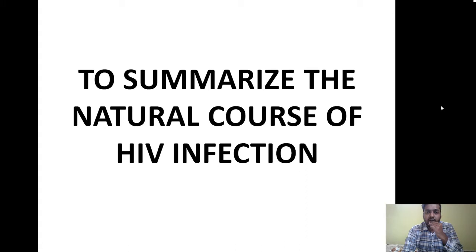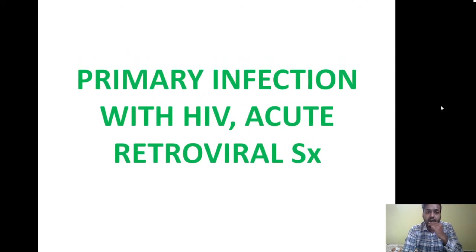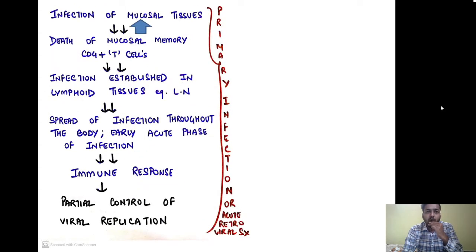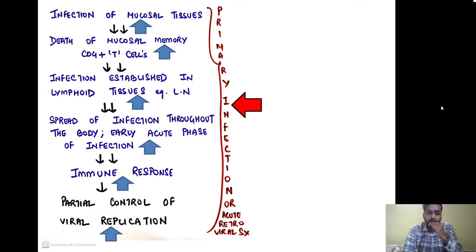Last time we read about the natural course of HIV infection in detail. There are three basic stages: the first stage is primary infection followed by acute retroviral syndrome; the second is the chronic phase of clinical latency; and the third is acquired immunodeficiency syndrome, that is AIDS. If you do not have extra time to read all the details, you can follow this chart. In primary infection, there is initial infection of mucosal tissues, followed by death of mucosal memory CD4+ T cells, establishment of infection in lymphoid tissues such as lymph nodes, viremia spreading throughout the body, and then an immune response is mounted with partial control of viral infection.